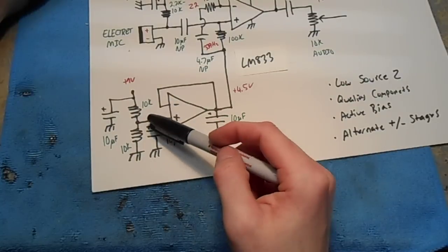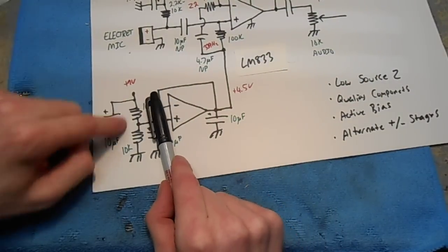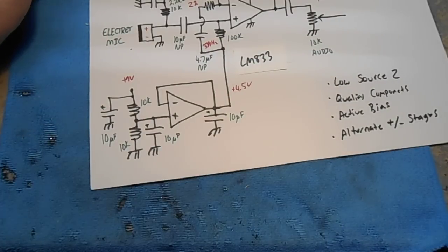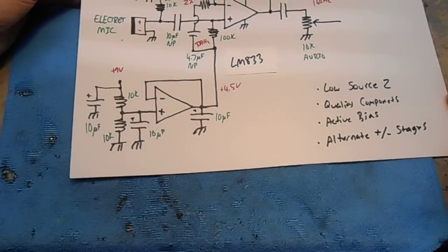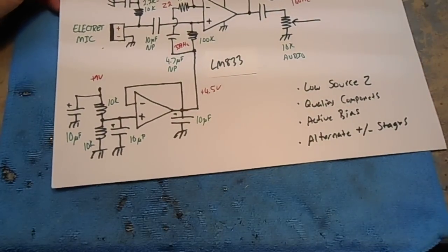Normally you just see, if you ever see a schematic, it'll just have these two resistors feeding into the non-inverting stage. That works, but we can get much better stability using this circuit.